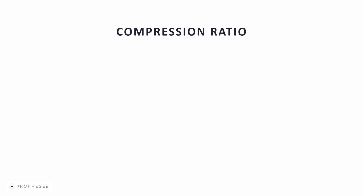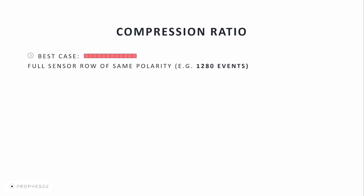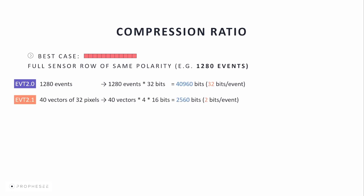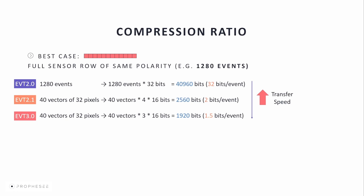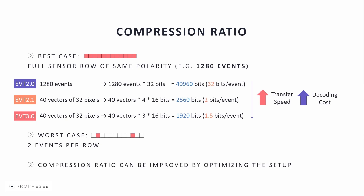Here we'll show the compression ratio compared for the three main encoding formats. The best case is having a full sensor row of the same polarity, giving a total of 1280 events for the Gen4 sensors. EVT2 will encode each event in 32 bits. EVT2.1 will encode the same events as 40 vectors giving a compression ratio of 2 bits per event, and EVT3 will encode the same events as 40 vectors giving a compression ratio of 1.5 bits per event. In this best case, the EVT3 compression ratio is high, allowing reduced data transfer. However, EVT3 is the most expensive to decode due to the state machine. The worst case is having few sparse events — for example, two events in a row encoded as a vector — giving EVT3 a very low compression ratio. Knowing the particularity of the data encoding, the compression ratio can be improved by optimizing the setup, for example by positioning the sensor to prioritize event distribution over sensor rows rather than columns.